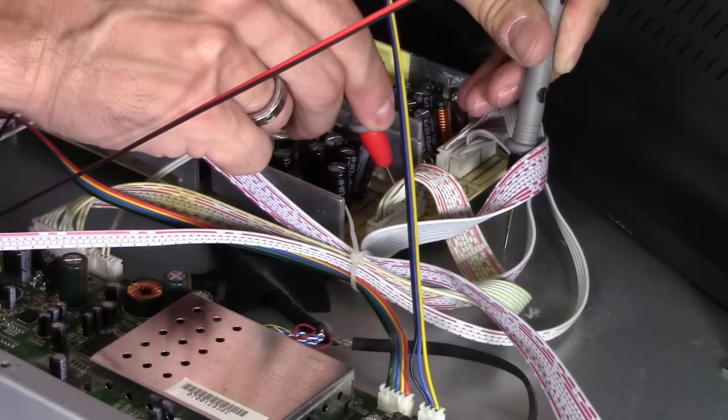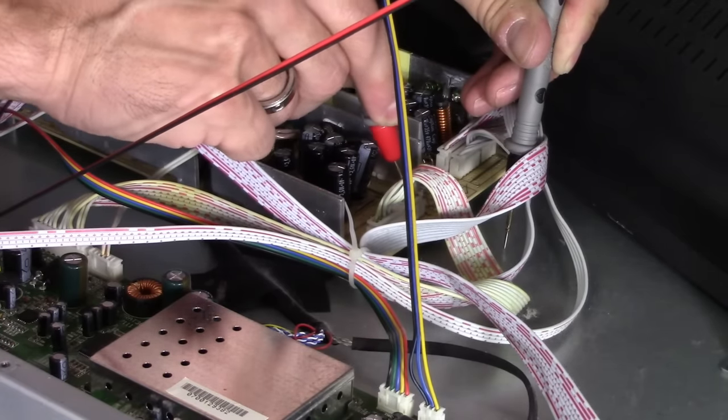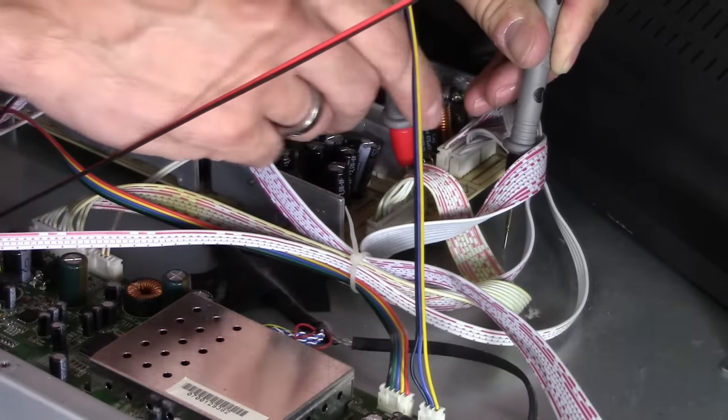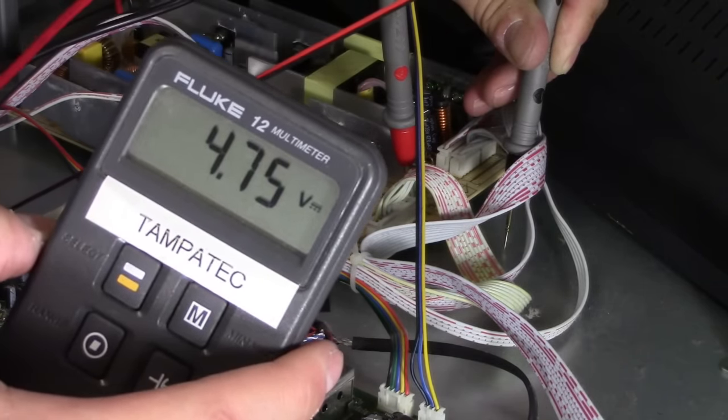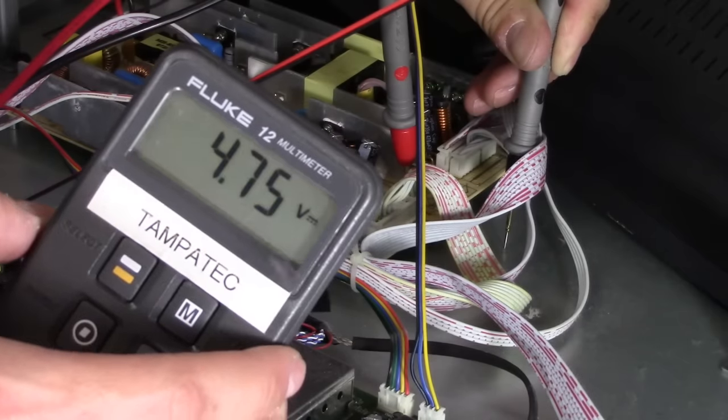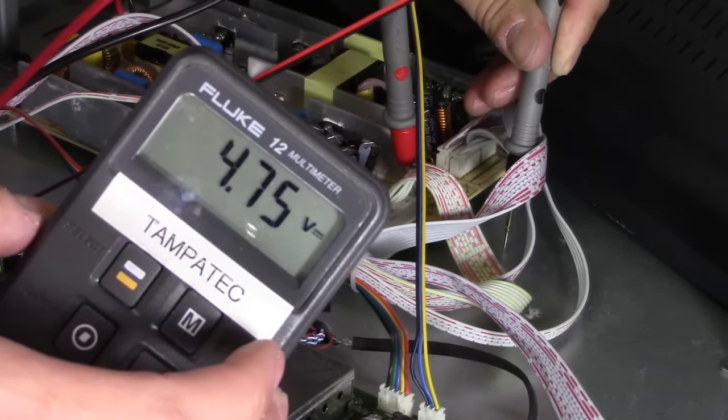All right, so we're getting very low. We do have voltage, but it's lower than 5 volts. So there's something wrong with the power supply board because it's not 5 volts solid. Some TVs, it's either 5 volts or 5.1 or 5.2.